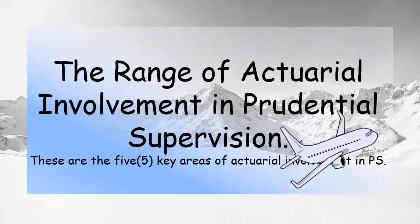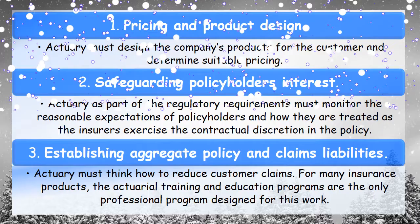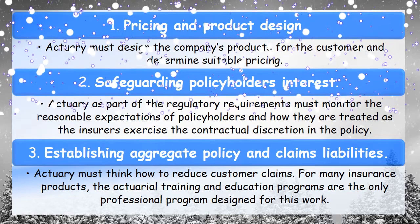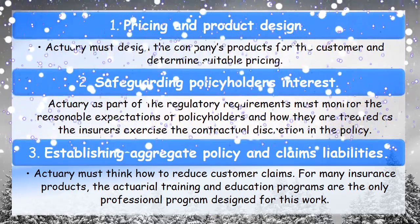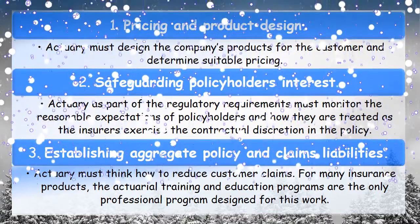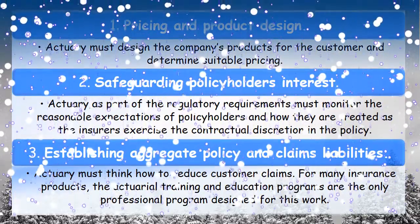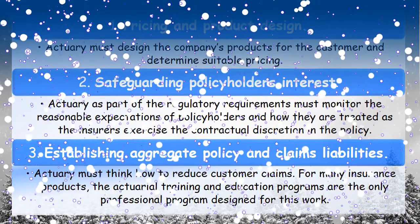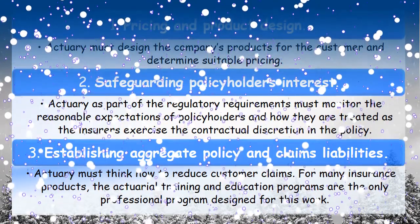The next topic covers the range of actuarial involvement in prudential supervision. There are five key areas. The first key area is pricing and product design — the actuary must design the company's products for the customer and determine suitable pricing. Second, they have to safeguard policyholders' interests. As part of regulatory requirements, the actuary must monitor the reasonable expectations of policyholders and how they are treated as the insurer exercises contractual discretion in the policy.